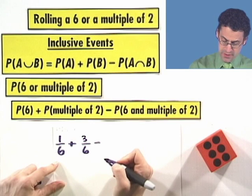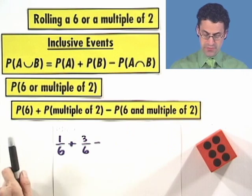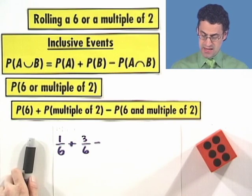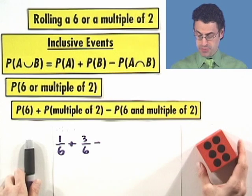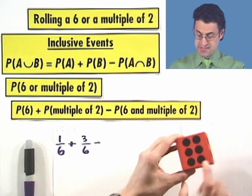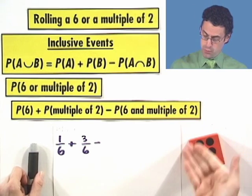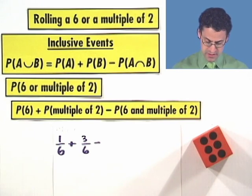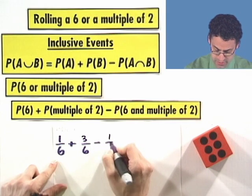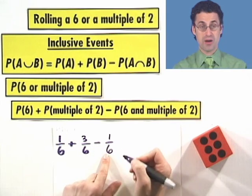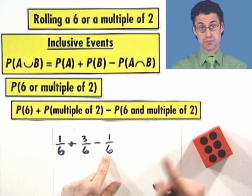And then we have to subtract off the probability that both of these happen, that we see a 6 and a multiple of 2. To see a 6 and a multiple of 2, it's got to land up 6. And so that's going to be 1 out of 6 possibilities. So I subtract off the probability that they have in common. That's the probability we counted twice. So let's subtract one of them away.